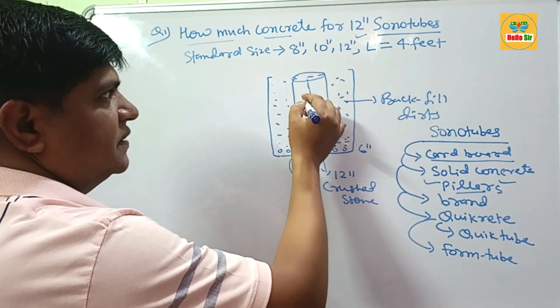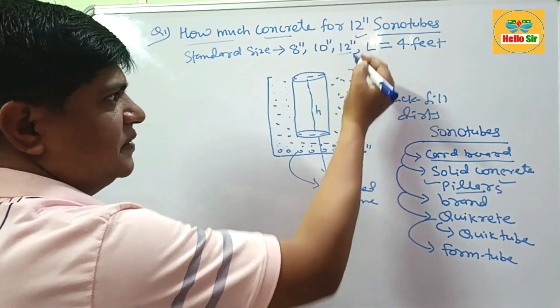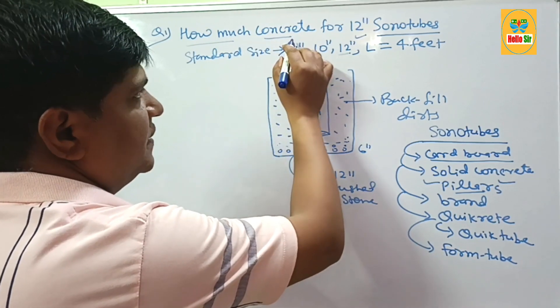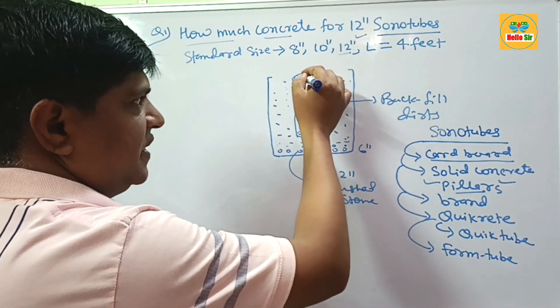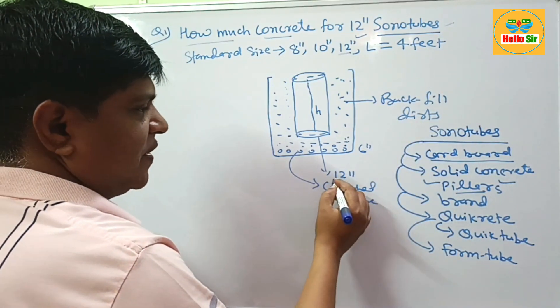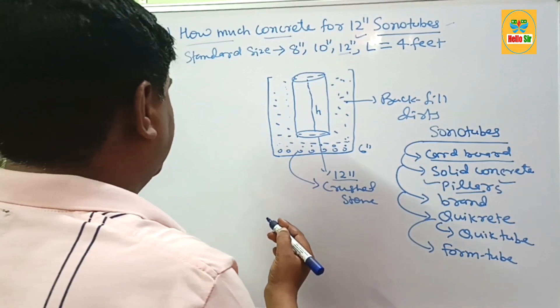How much concrete is filled in this tube if their diameter is 12 inches? You have to calculate how much concrete is required to fill this sonotubes if their diameter is 12 inches. Now come to the topic.